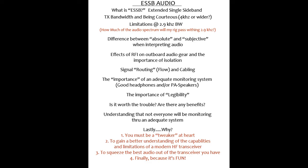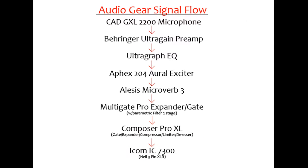So the signal flow goes from the microphone to the preamp. This microphone requires phantom power, so you need a preamp that supplies it. If you use a dynamic microphone, any old preamp will do. But if you use a microphone requiring 48-volt phantom power, you'll need a specific preamp. From there it goes to the Ultragraph EQ, then to the 204 Aural Exciter, then to the Microverb.